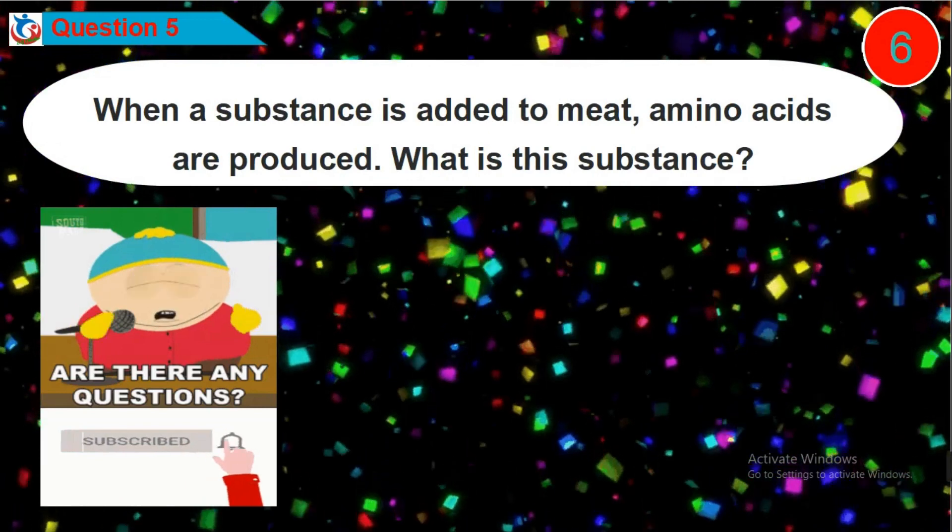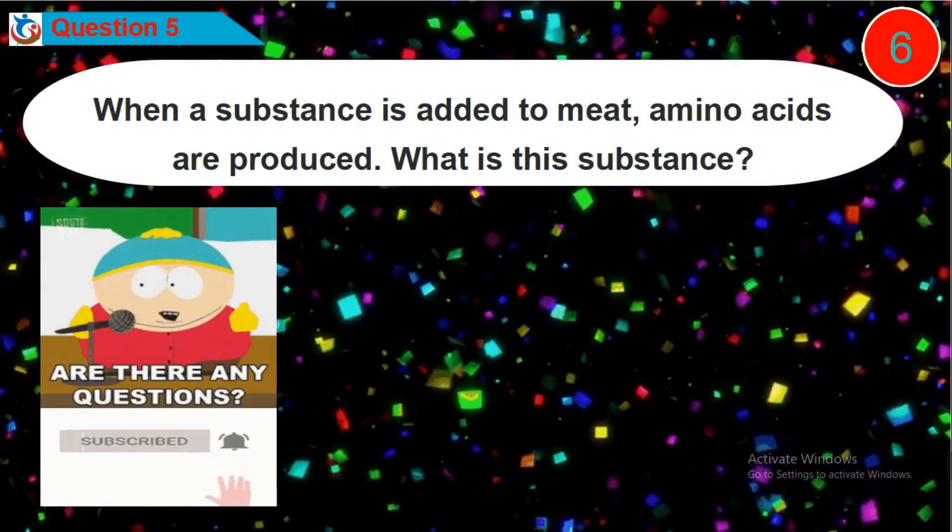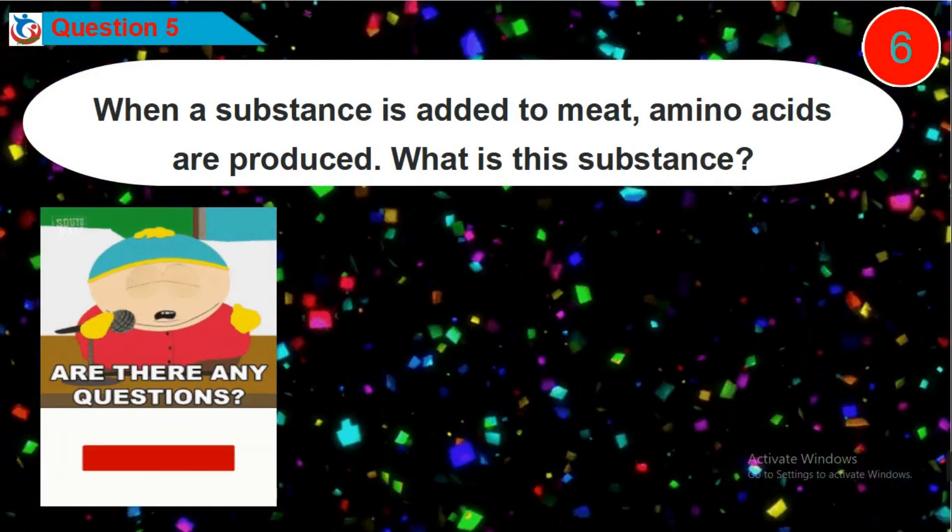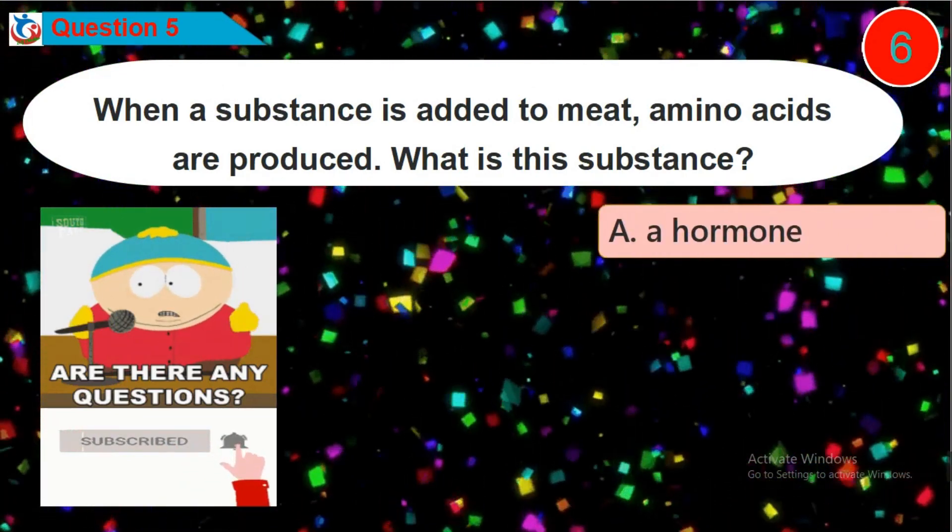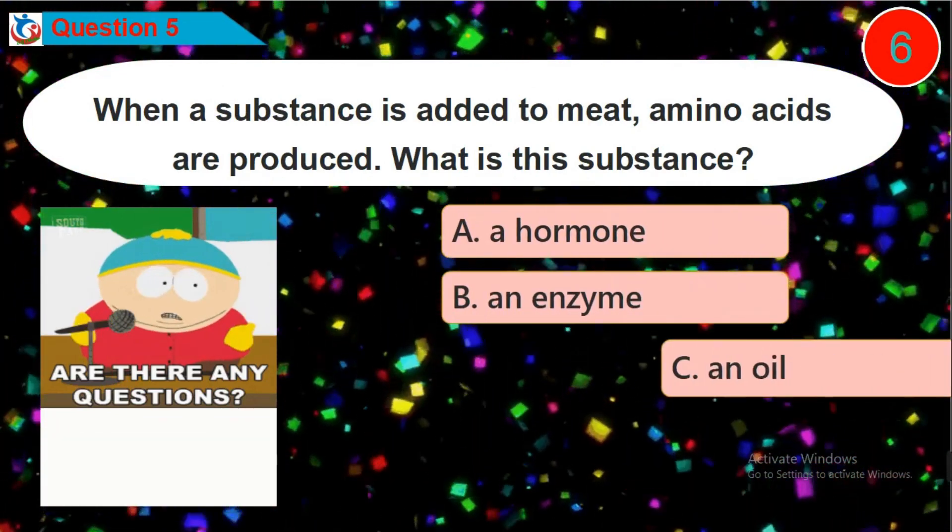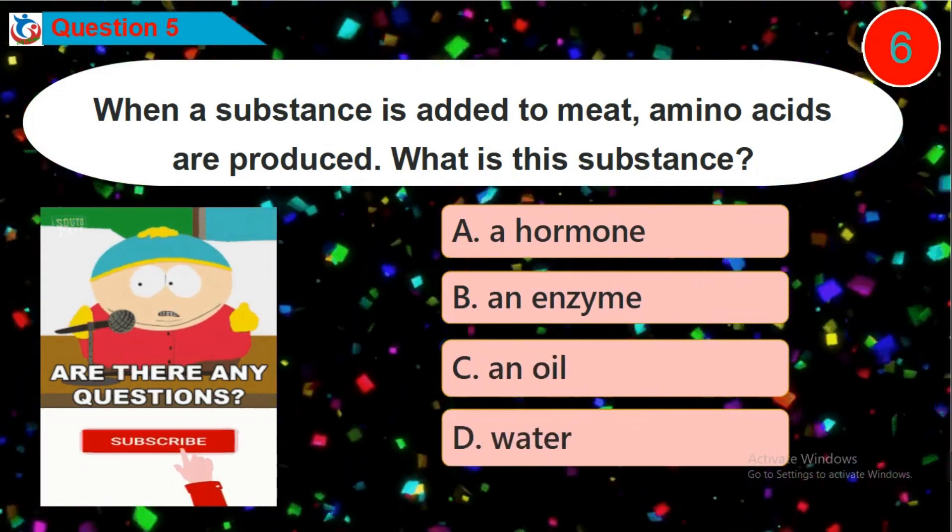Question 5. When a substance is added to meat, amino acids are produced. What is this substance? Is it option A, B, C or D?